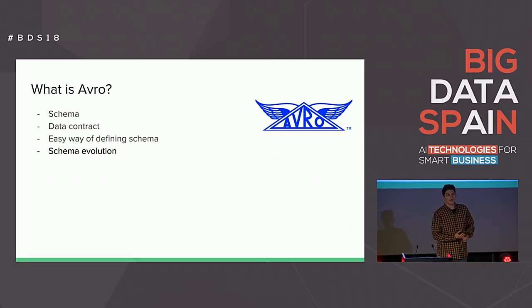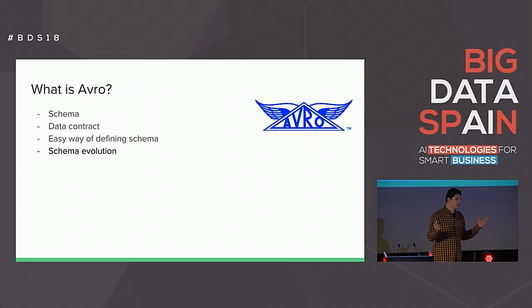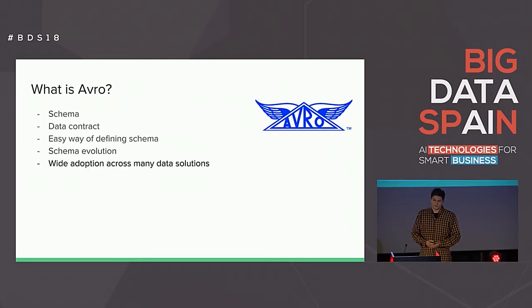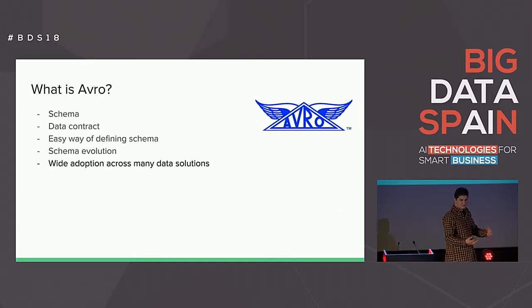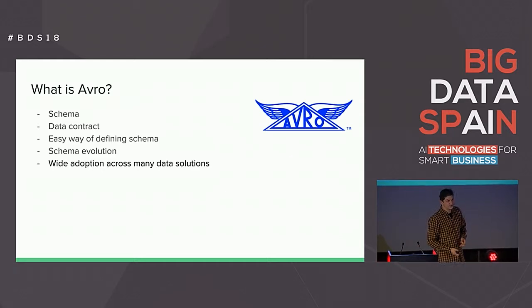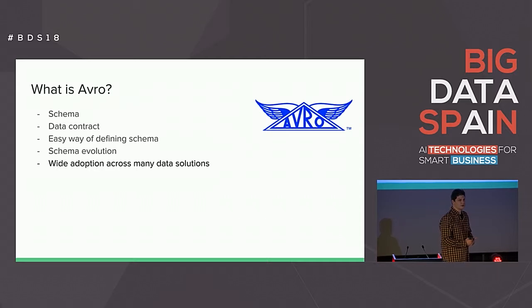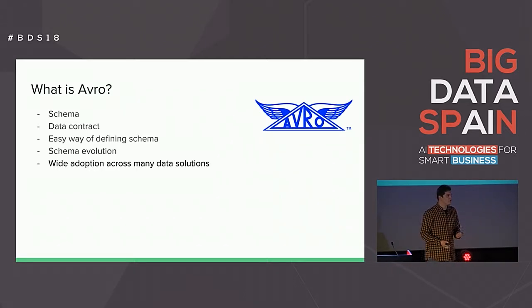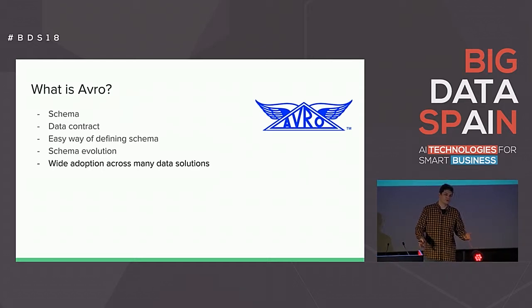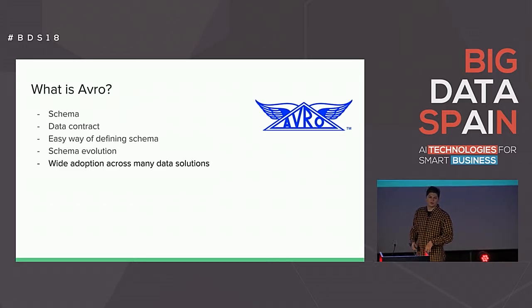Schema evolution is another key feature. With time, when your project goes live and requirements from the business side grow, you need to manage the evolution of your schema — and this is natively available in Avro. What's also important is that Avro is widely adopted across many big data ecosystem tools: Hadoop, Hive with SQL, Spark, Presto. It's quite easy to interchange data in Avro format across many systems. Also, Avro is exchanged in binary and stored as binary for long-term storage, reducing frame size on the wire.